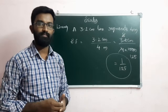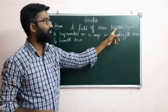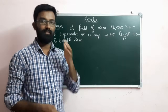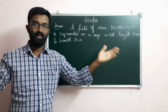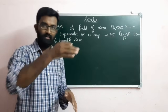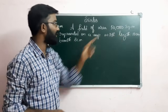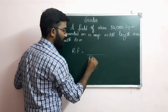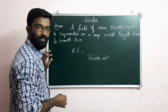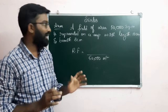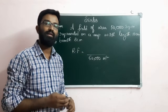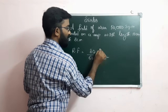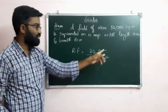Now for area-wise RF. A field has an original area of 50,000 square meters, and it is represented on a map with length 10 cm and breadth 8 cm. RF equals dimension of diagram divided by original dimension. The diagram area equals length into breadth, which is 10 into 8 equals 80 cm squared. The original area is 50,000 square meters.